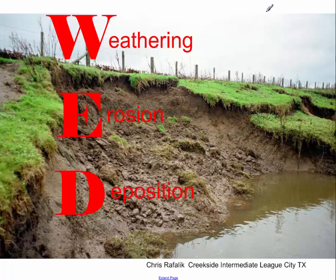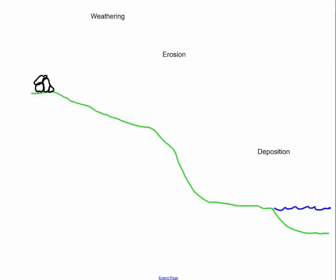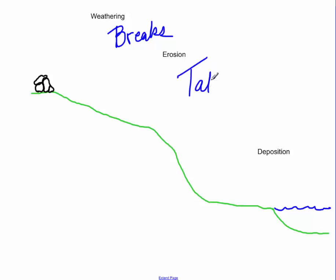Today we're going to talk about weathering, erosion, and deposition, and what the differences between those are. The easiest way to describe it is: weathering breaks it, erosion takes it, and deposition drops it.